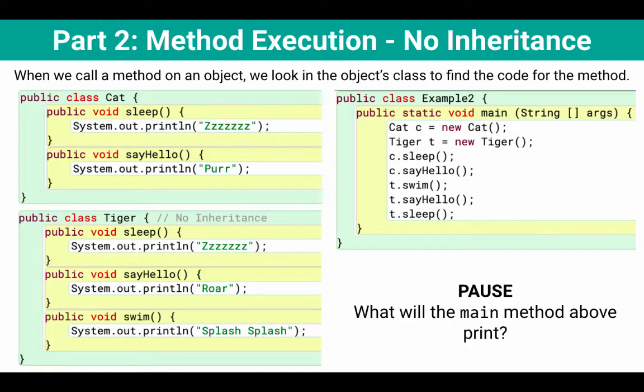We'll start with an exercise, so you're going to pause here. I've got an example main method on the right-hand side, and then I've got two classes, a cat class and a tiger class. So I want you to try and trace through the example main method and figure out what it'll print. You should pause here and I'll keep going.